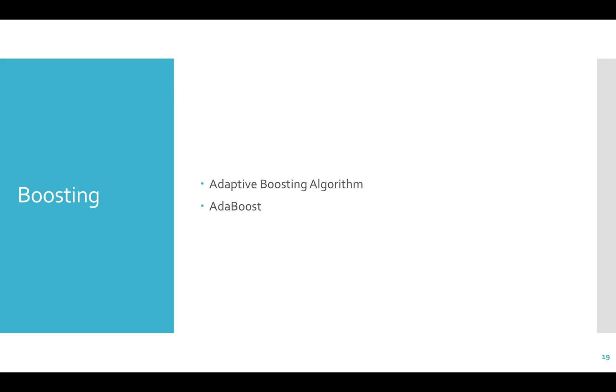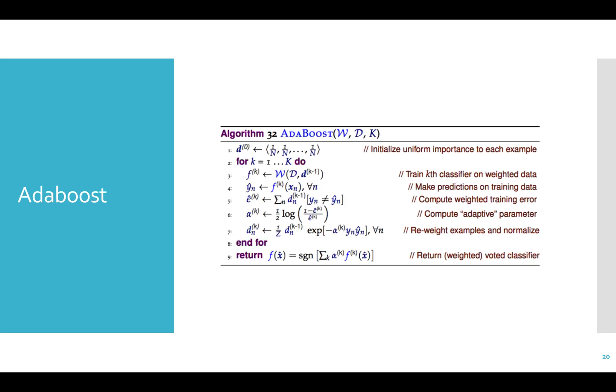AdaBoost stands for adaptive boosting algorithm. I like to present the algorithm first so we can go through it step by step. W is the weak learner. This can be a perceptron, a decision tree, whatever. D is the set of training data. K is the number of times we're going to run AdaBoost in an effort to make the weak learner better.